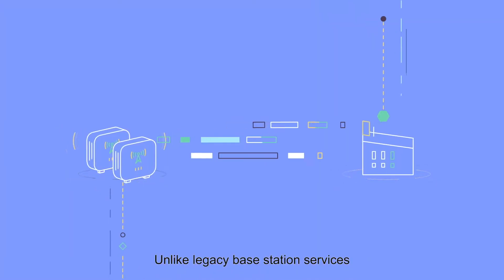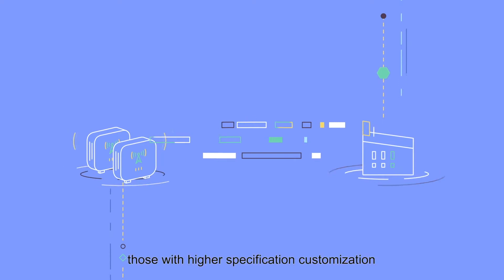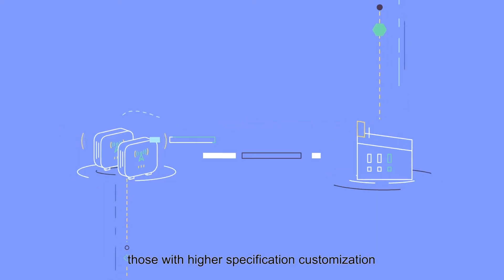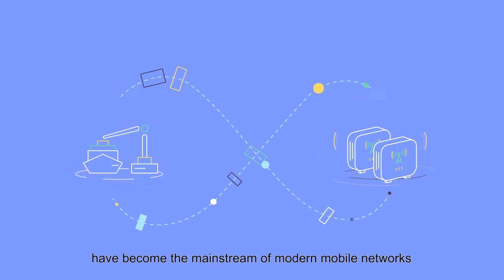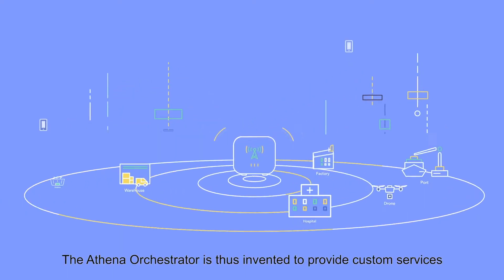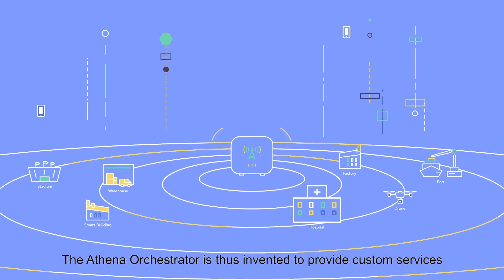Unlike legacy-based station services, those with higher specification customization have become the mainstream of modern mobile networks. The Athena Orchestrator is thus invented to provide custom services for private networks.